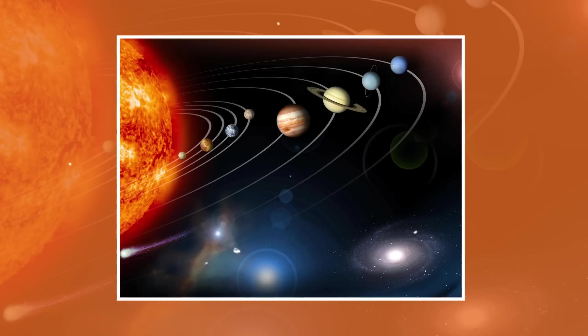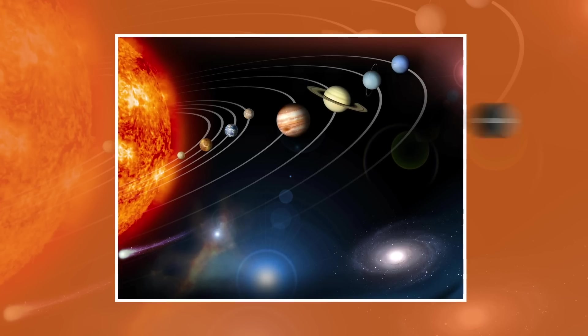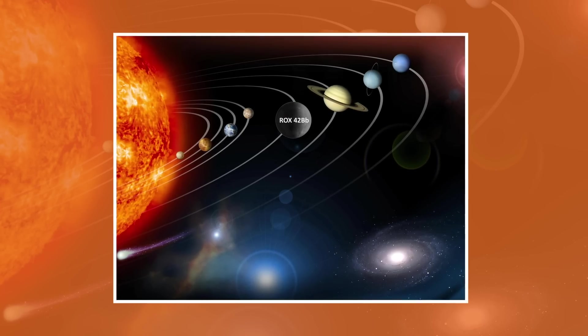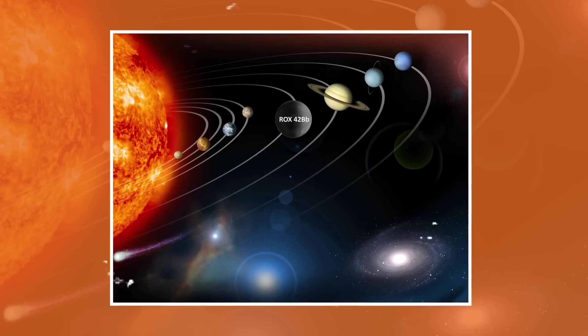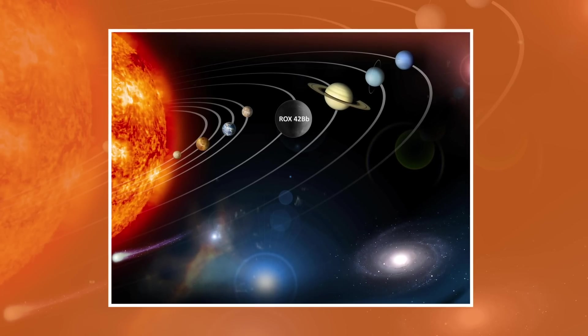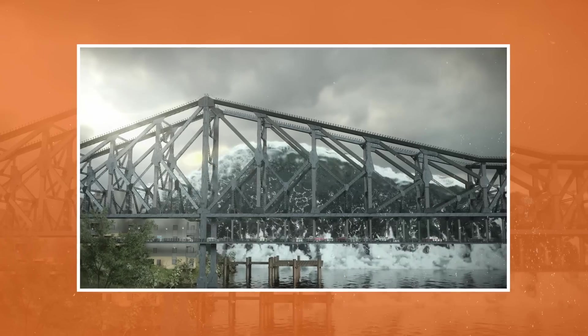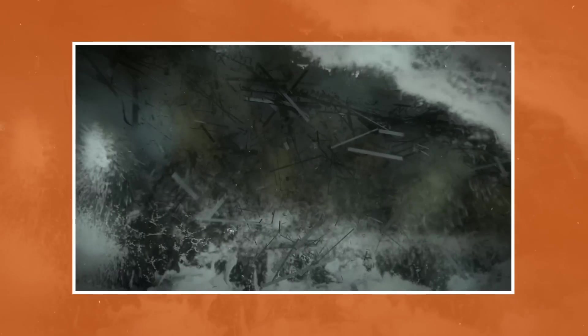To put this in perspective, if ROX 42bb was put in the same place as Jupiter, we would see an orb about half the size of the moon in the sky each night, and its gravitational pull would be enough to affect our tides and cause worldwide tsunamis. Yet, still, those numbers absolutely pale in comparison with what is coming up.